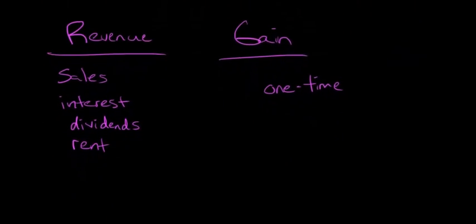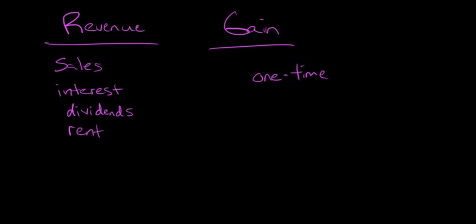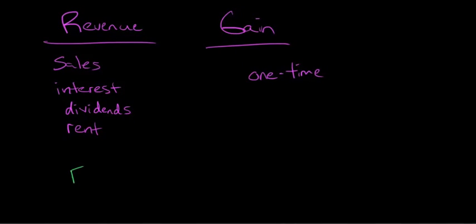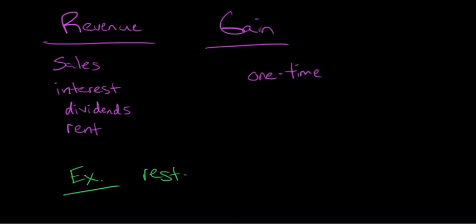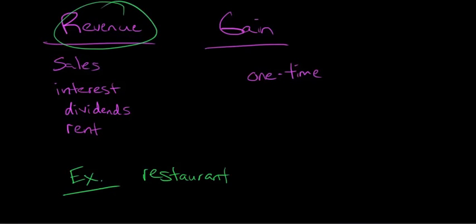So maybe this is some kind of one-time thing or an asset. Let me just give an example. This might be a little bit easier to understand. So let's say that you own a restaurant. Let's think about what are the types of things that would be revenue, and then what are the types of things that would be a gain.